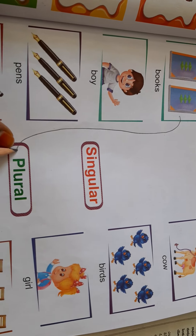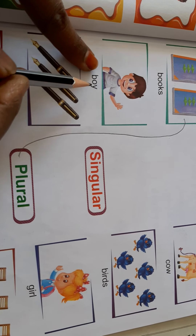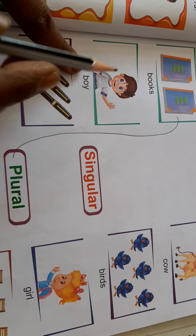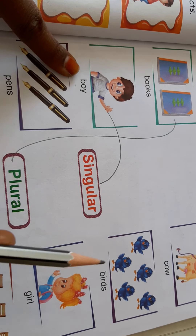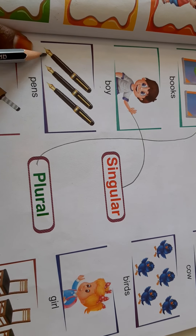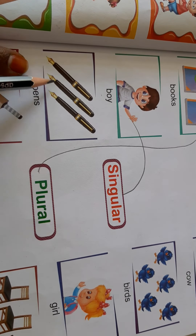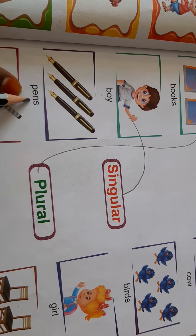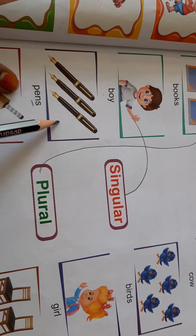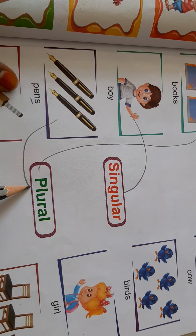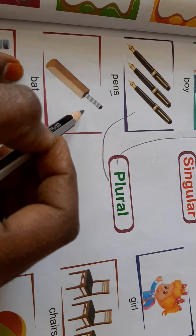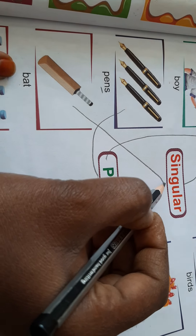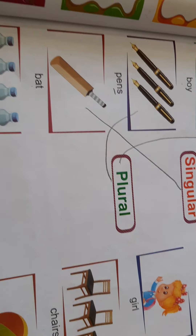Books is plural, so plural matches plural. Boys — boy is singular, so singular matches singular. What is the pen? One, two, three — there are three pens, so pens is plural form. Plural matches plural. Here is a bat — that is singular, so singular matches singular.